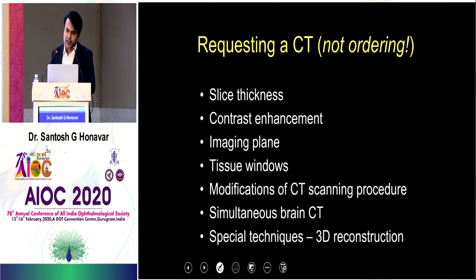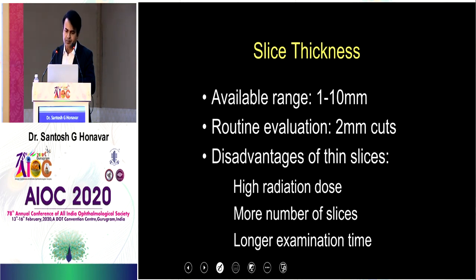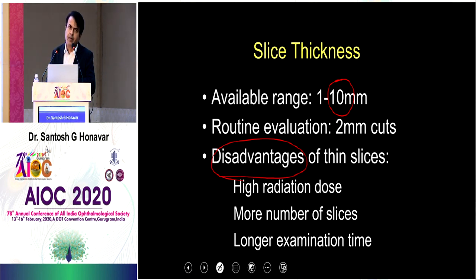Modifications of the CT scan procedure include simultaneous brain CT and 3D reconstruction if required. Unless you send the patient with all this information, the scan you get may not have this information because the radiologist is not in the picture when the scan is being done. It is done by a technician who may not have seen the patient. If you write just 'CT scan,' it may be done with 10 mm cuts — meaning a tumor which is 8 mm may be completely missing. For the orbit, 2 mm scans are ideal; for the optic nerve, 1 mm is ideal. Currently with spiral CT, scanning is very rapid and images can be reconstructed at any frequency.